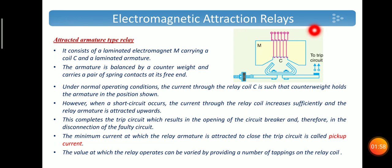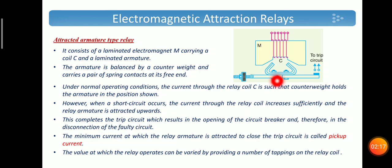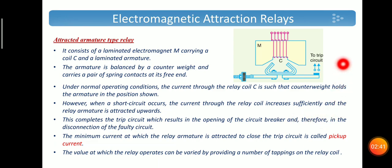This coil is connected to the line or apparatus to be protected and it carries the current in the transmission line. When a fault occurs, the current in the line increases, producing more attractive force than the counter weight, and the armature is attracted by the electromagnet. When the armature is attracted upwards, the trip circuit gets closed due to the spring arrangement, resulting in opening of the circuit breaker and disconnection of the faulty circuit. The minimum current at which the relay armature is attracted to close the trip circuit is called the pickup value of current.